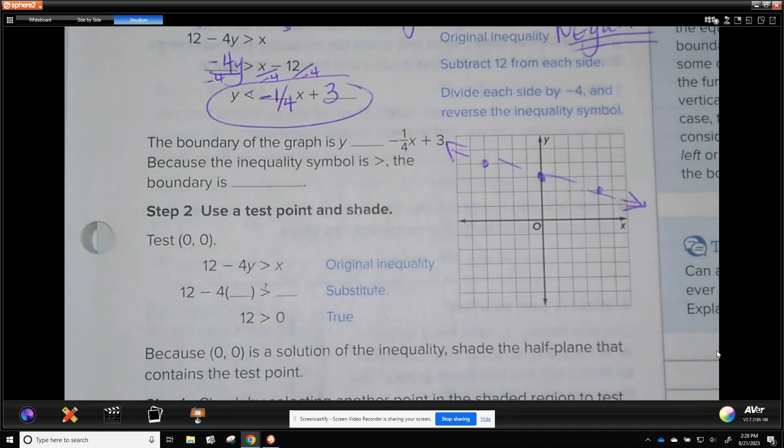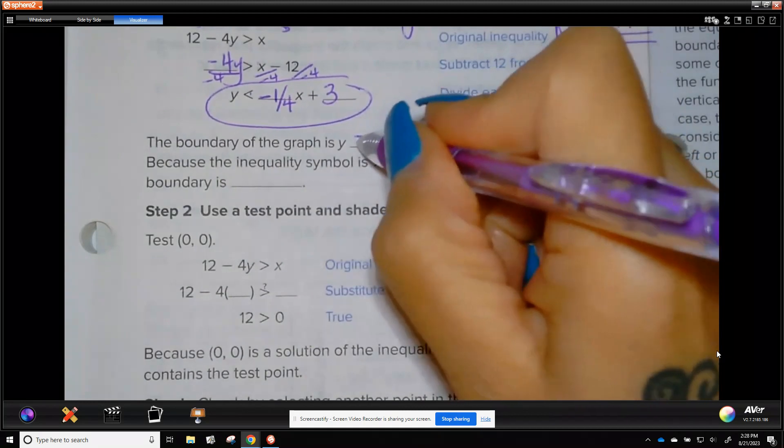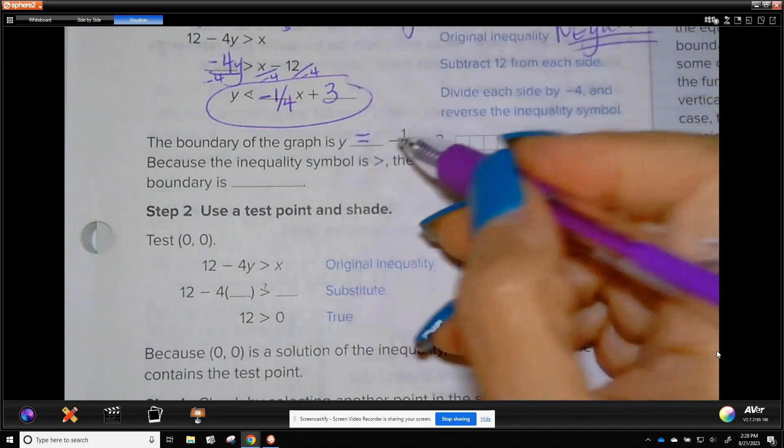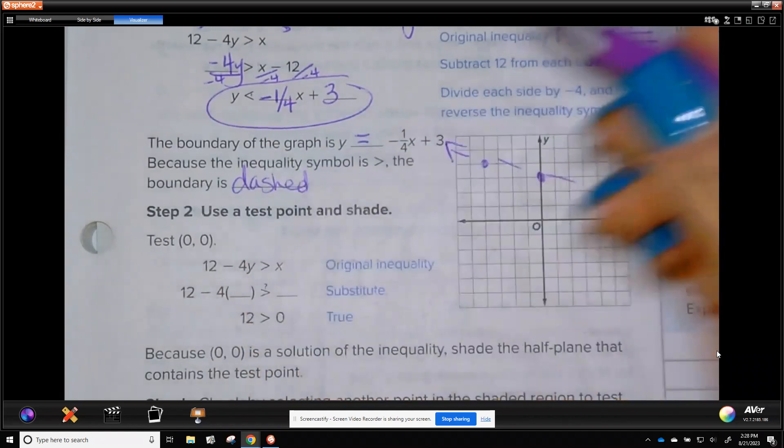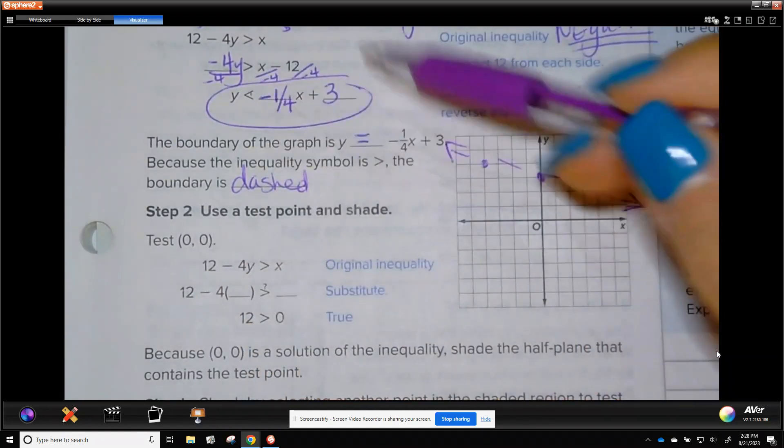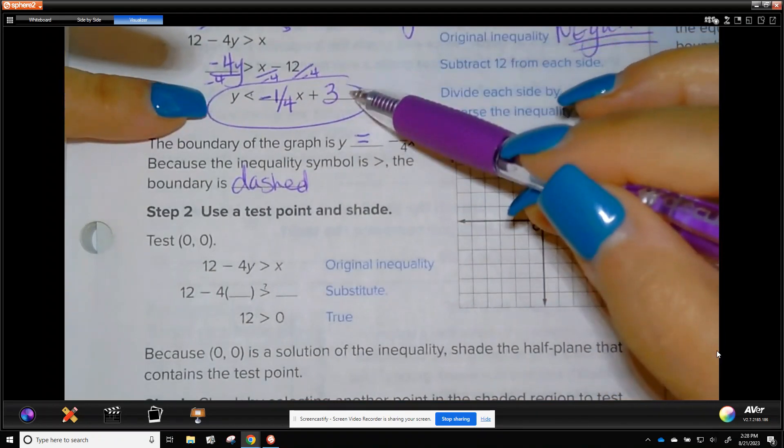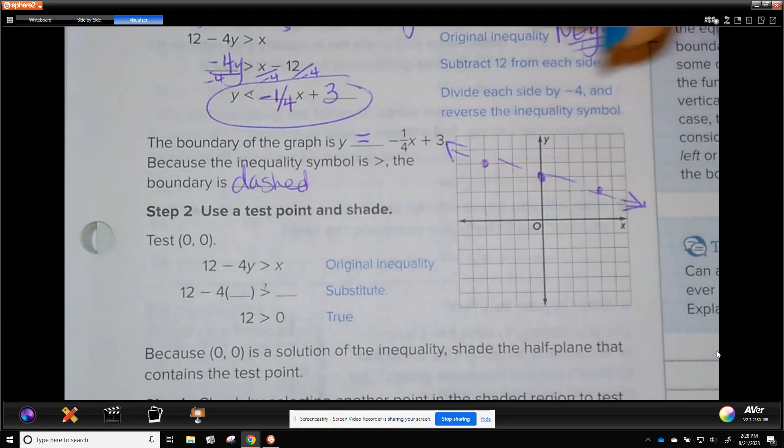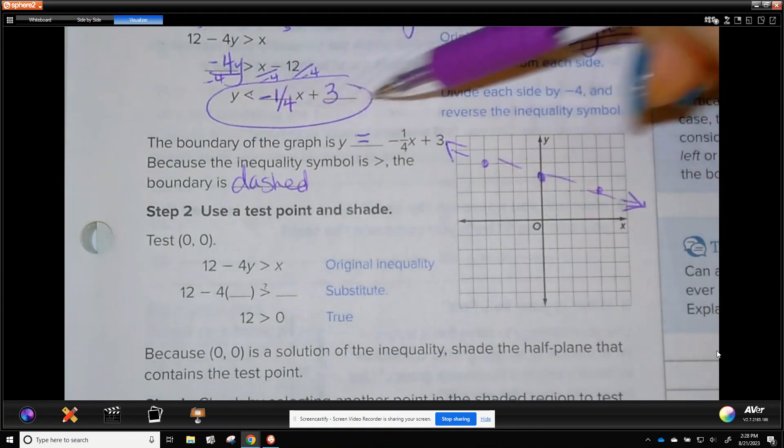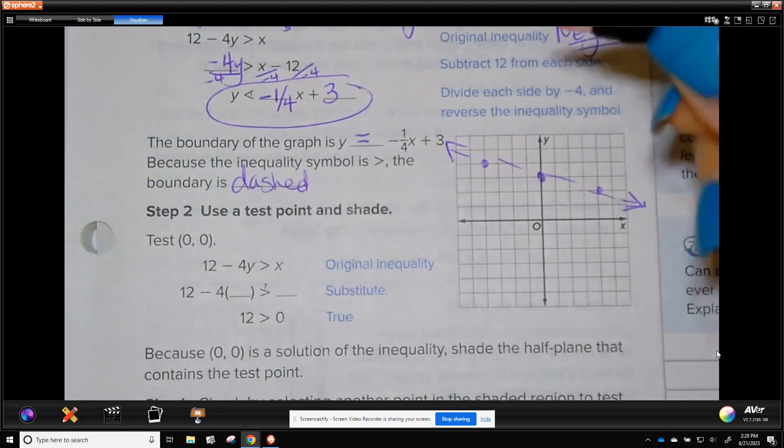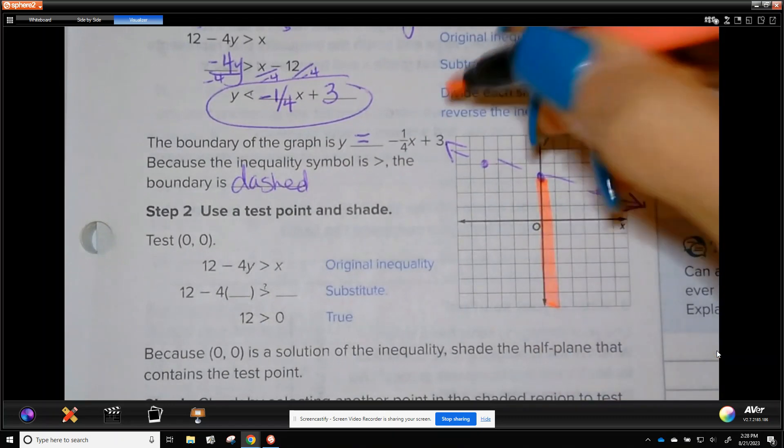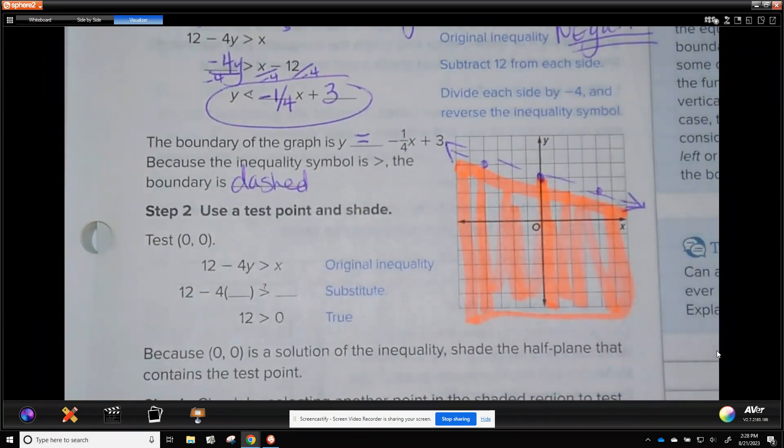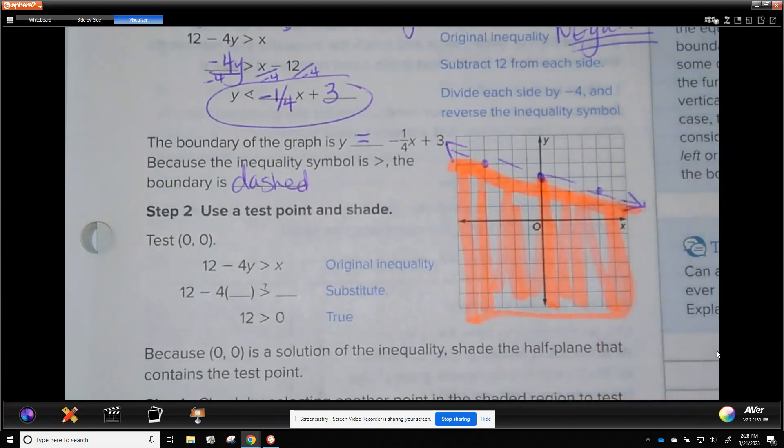Now, in order to know, the boundary of the graph is this. This is the boundary. Because a symbol is greater than, it is dashed. Now, our final symbol was less than. But our initial symbol was greater than. And when you get to this point, you need to read this out loud to yourself. Y less than all of this. So where is y less than? Well, y is less than right here. So all of this is shaded below the dashed line.